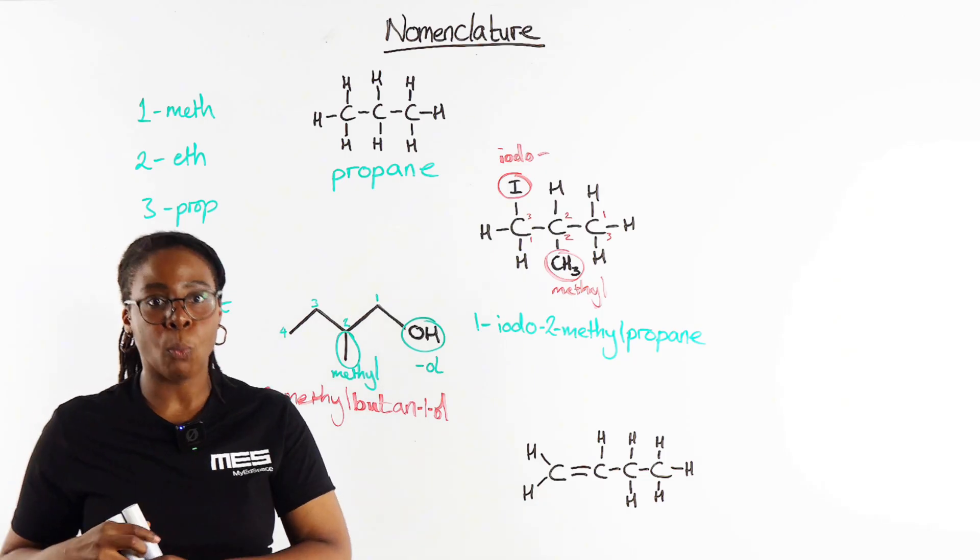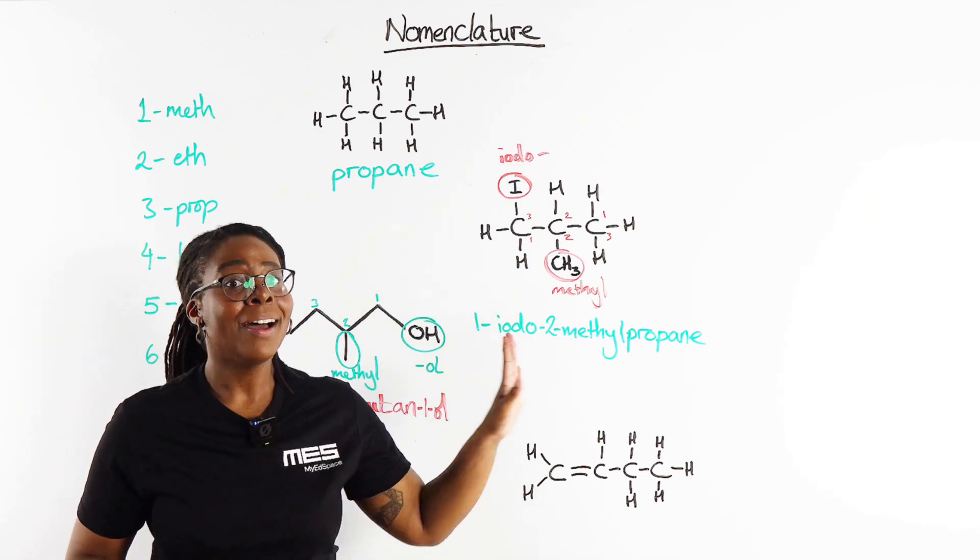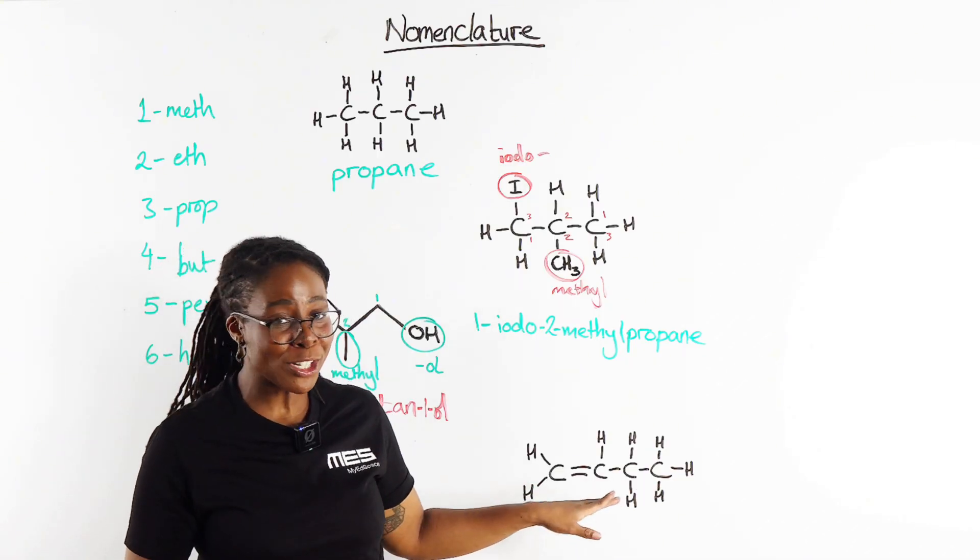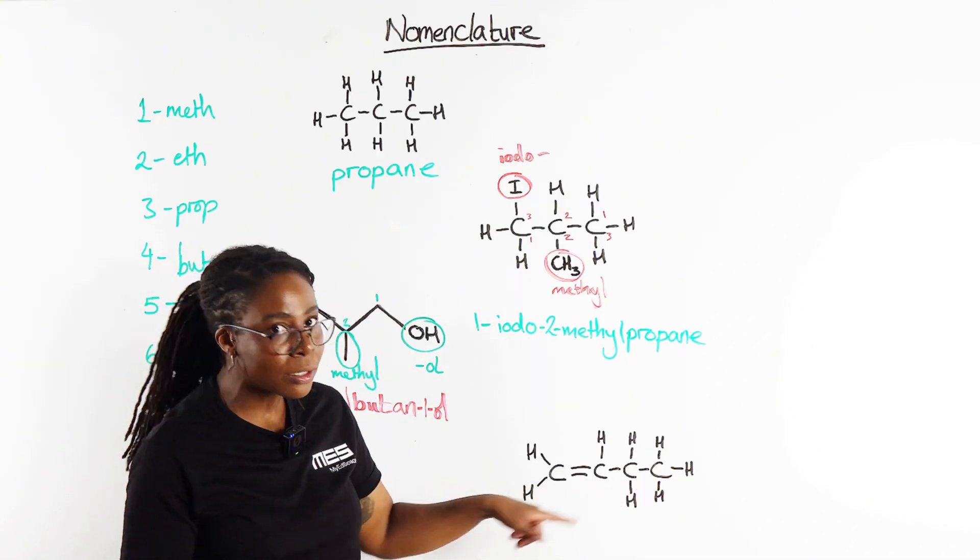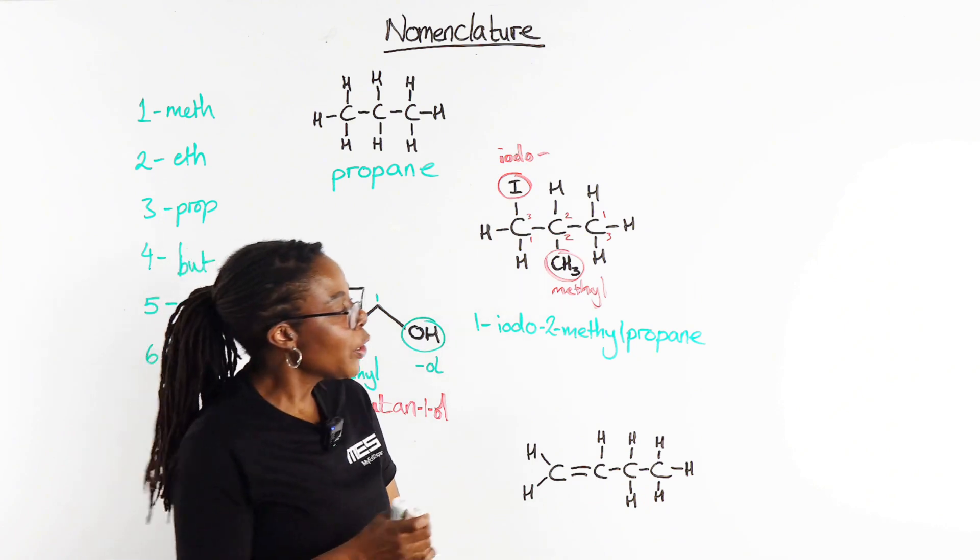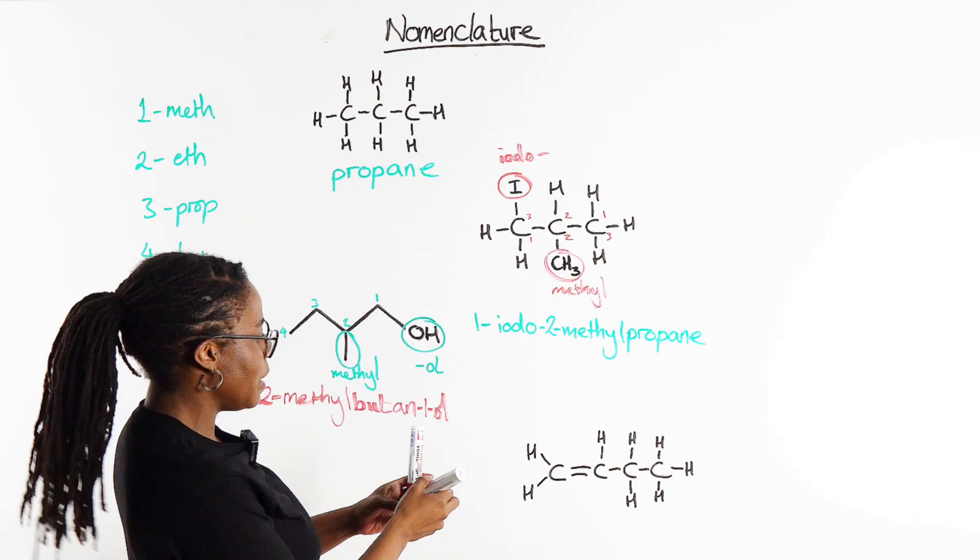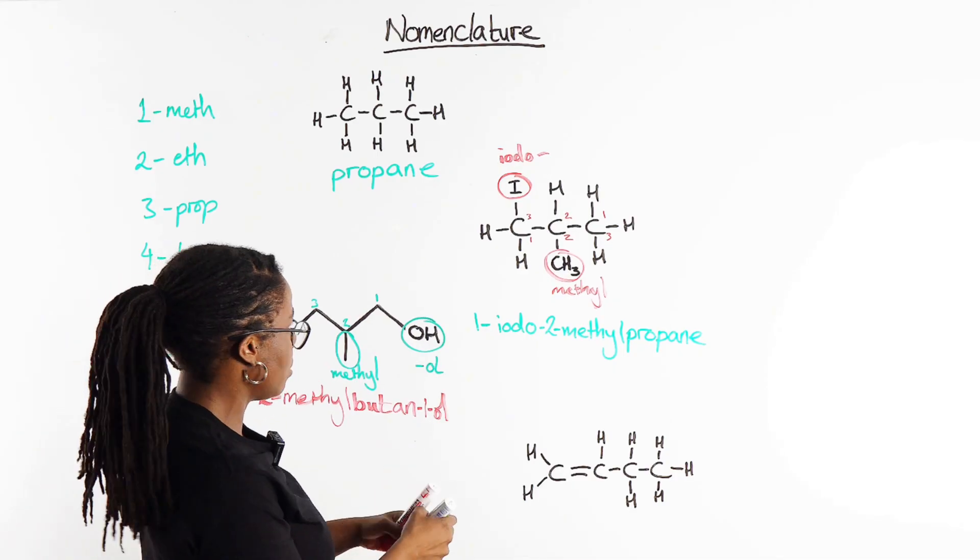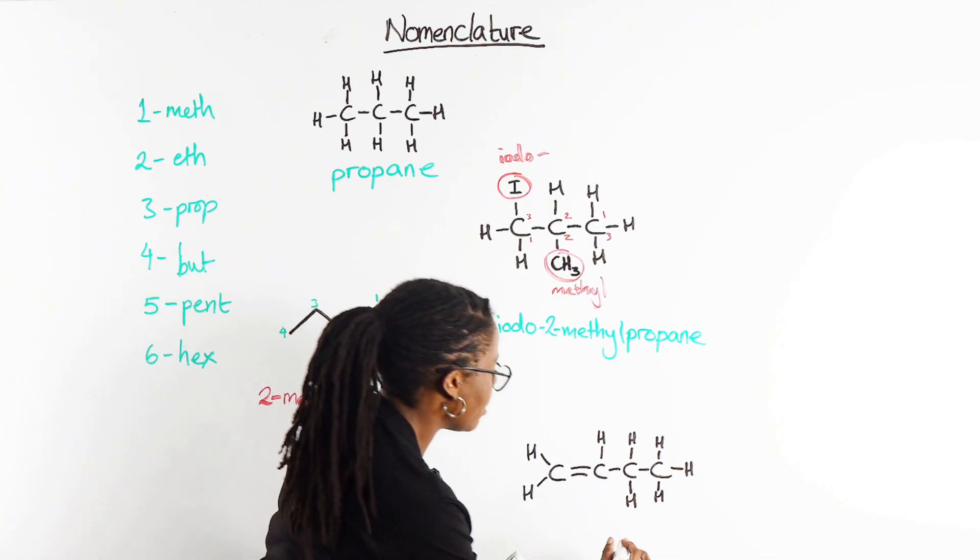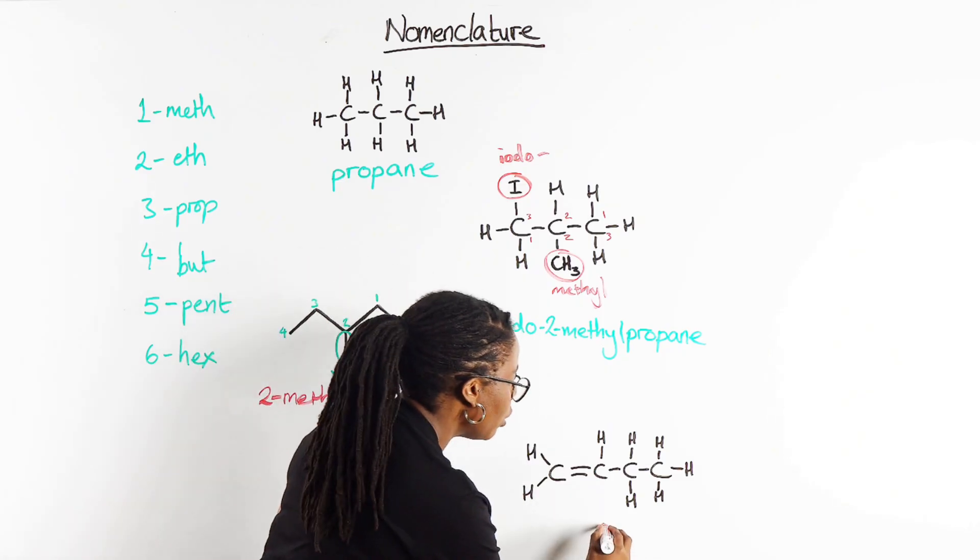We will start counting closest to the high priority functional group. That means that our methyl group is on carbon number two and our -ol, our alcohol group, is on carbon number one. 2-methylbutan-1-ol. Last compound, we have got, hopefully you can spot, we've got this carbon-carbon double bond making this an alkene.